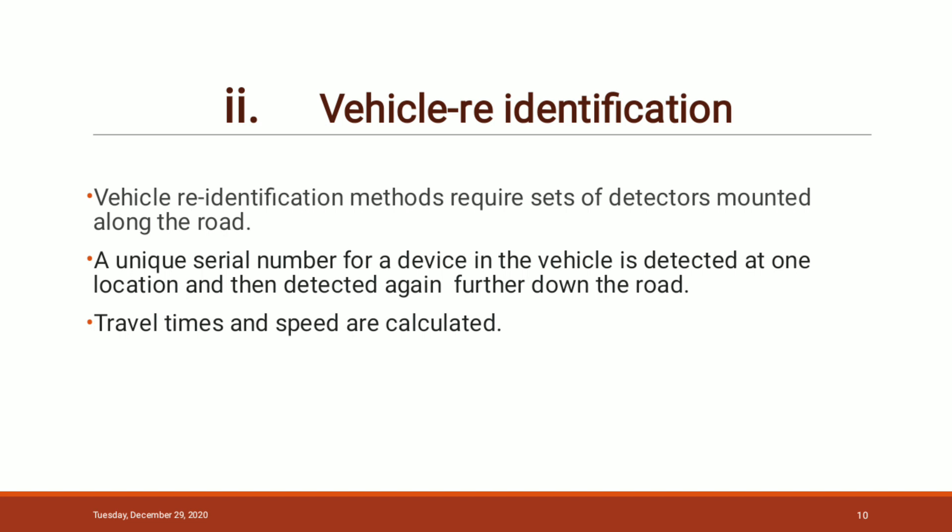The next method is the vehicle re-identification method. In this technology, a unique serial number of devices inside the vehicle, such as Bluetooth or other devices, is detected at one location and then re-identified further down the road. By comparing the time at which the device inside the vehicle is detected by a set of sensors, the time and speed of the vehicle can be calculated.